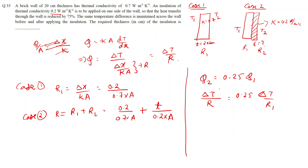The temperature difference delta T across both cases is given as the same, so we can cancel that. This gives us R upon R1 equals 1 upon 0.25, which equals 4.